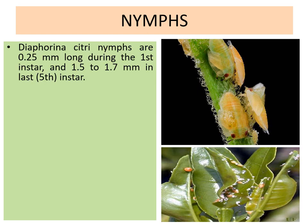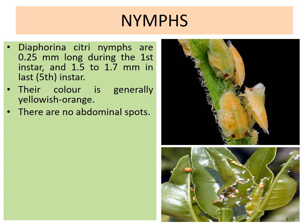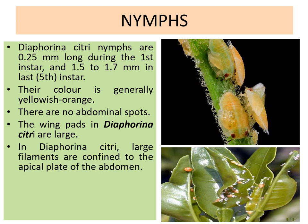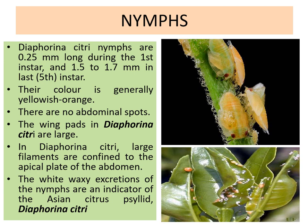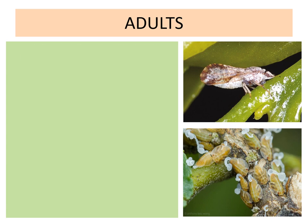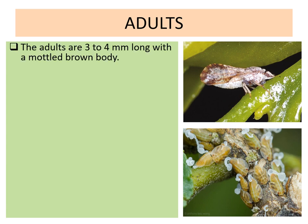Diapherina citri nymphs are 0.25 mm long during the first instar and 1.5 to 1.7 mm long in the fifth instar. Their color is generally yellowish-orange with no abdominal spots. The wing pads are large, and larger filaments are confined to the apical plate of the abdomen. The white waxy excretions of the nymph are an indicator of Asian citrus psyllid, i.e., Diapherina citri. In the picture you can clearly see these waxy secretions.